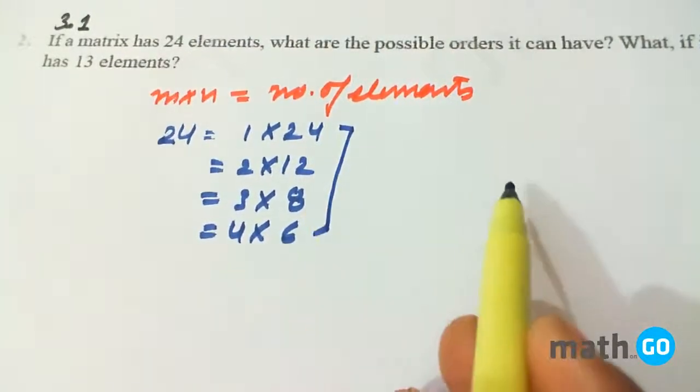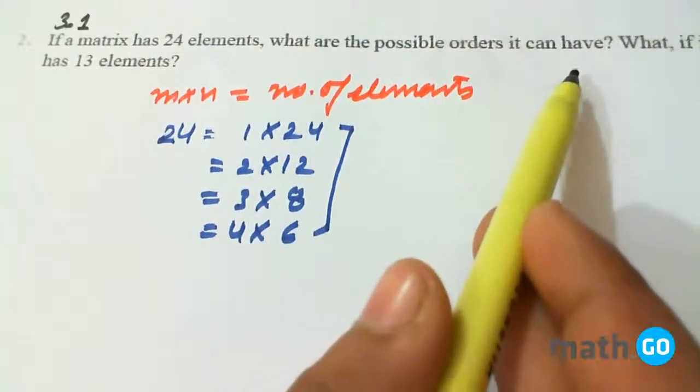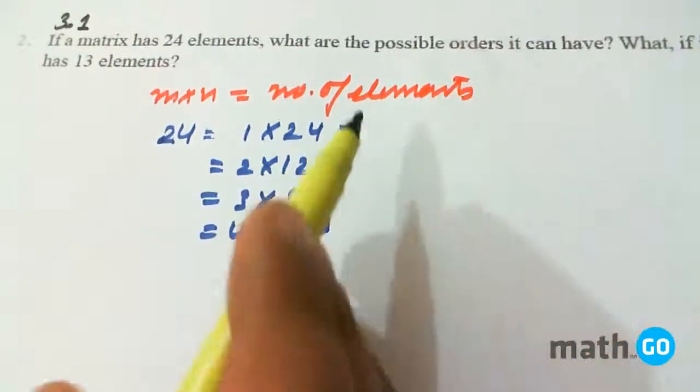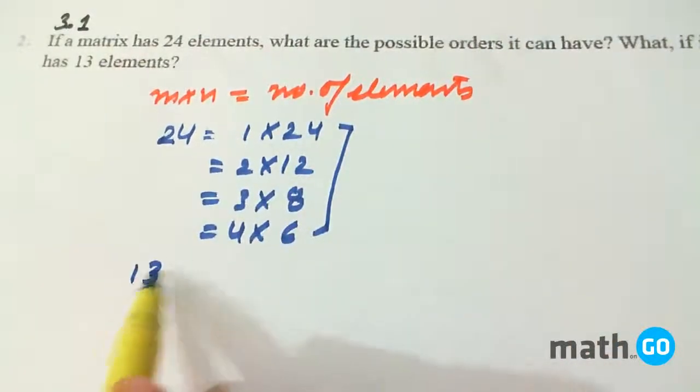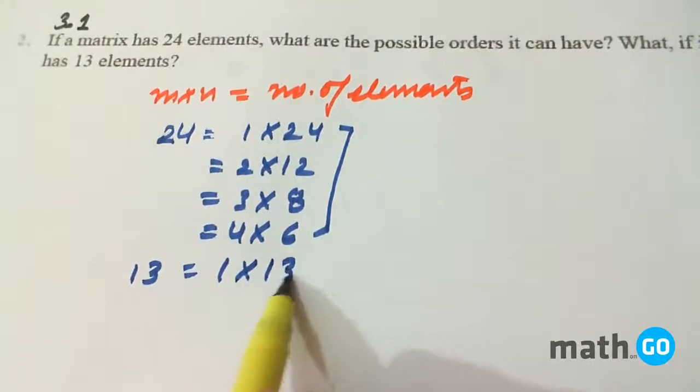In other words, these are the different possible orders that the matrix can have and if it has 13 elements, then only 1 order is possible.